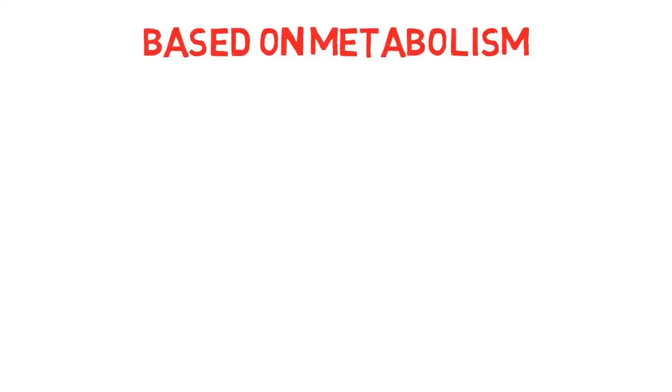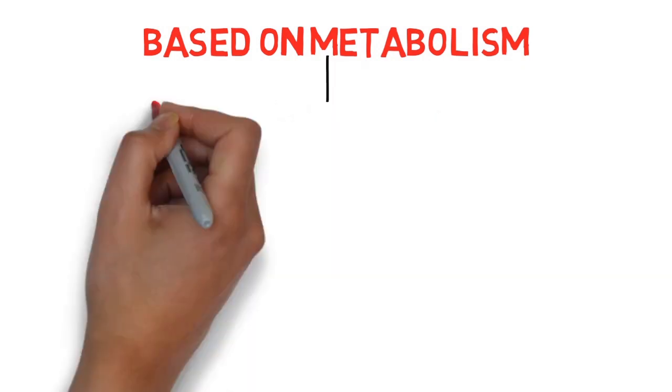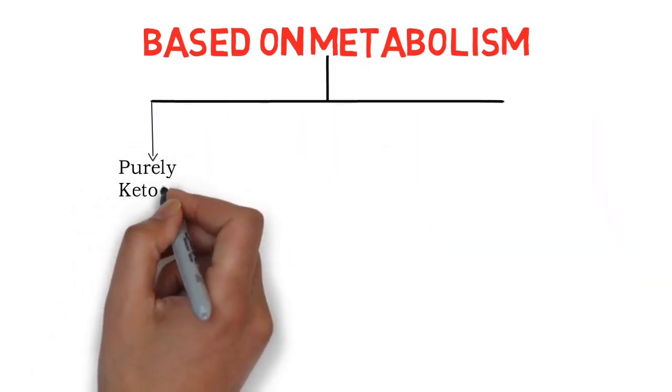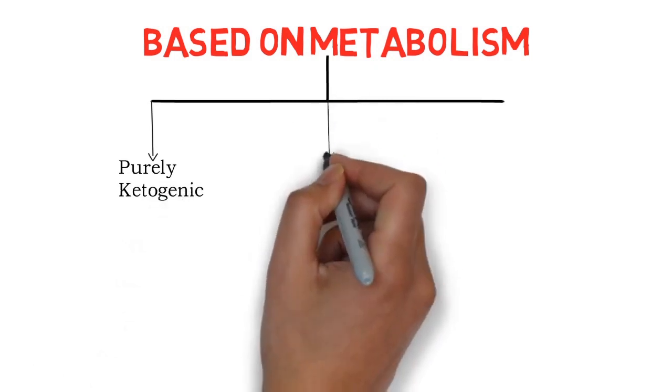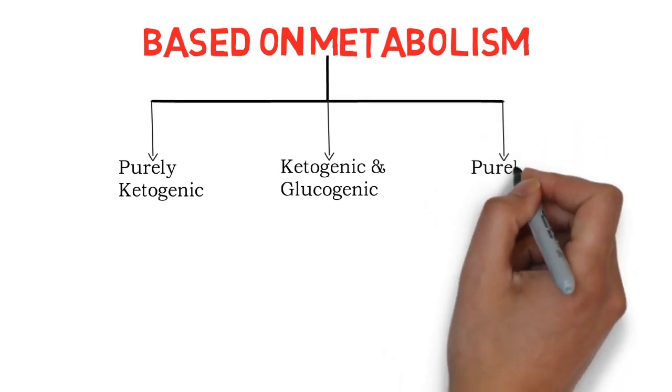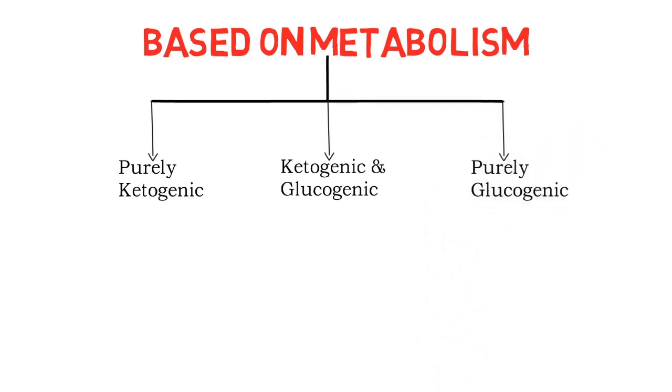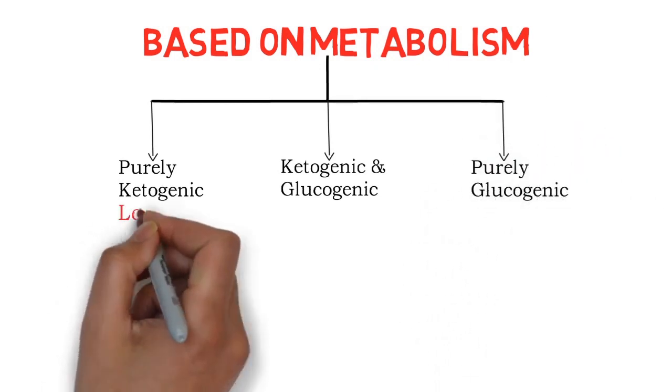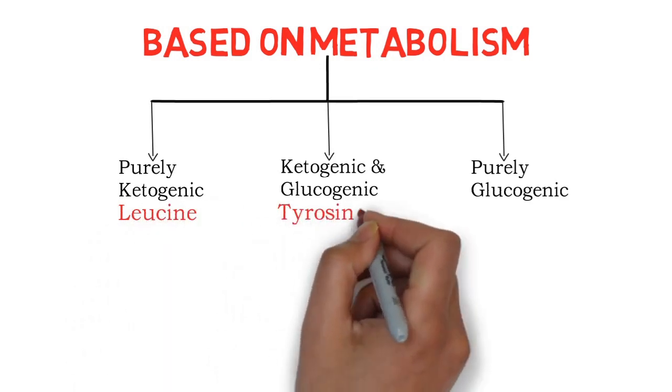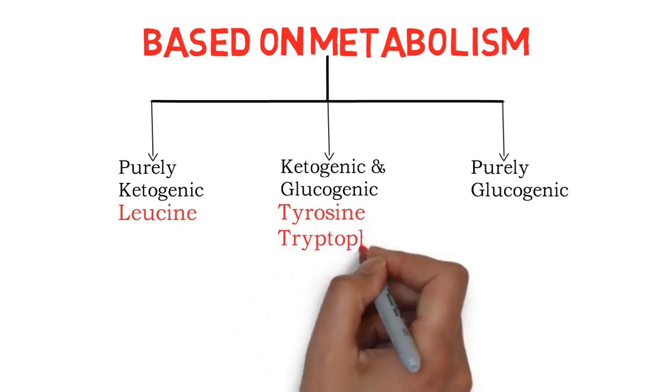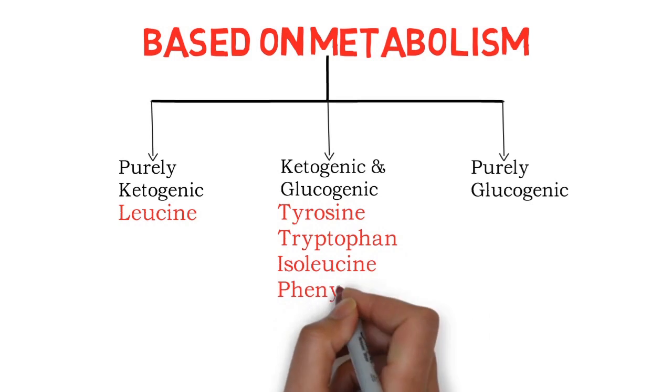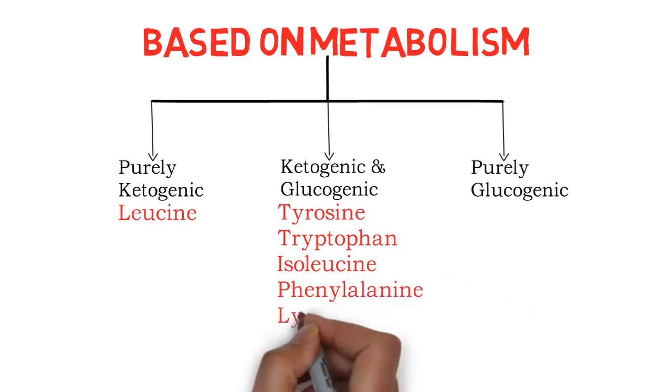Based on metabolism, amino acids can be divided into three parts: first is purely ketogenic, then ketogenic and glucogenic, and purely glucogenic. Only one amino acid is purely ketogenic, that is leucine. Both ketogenic and glucogenic includes tyrosine, tryptophan, isoleucine, phenylalanine, and lysine.